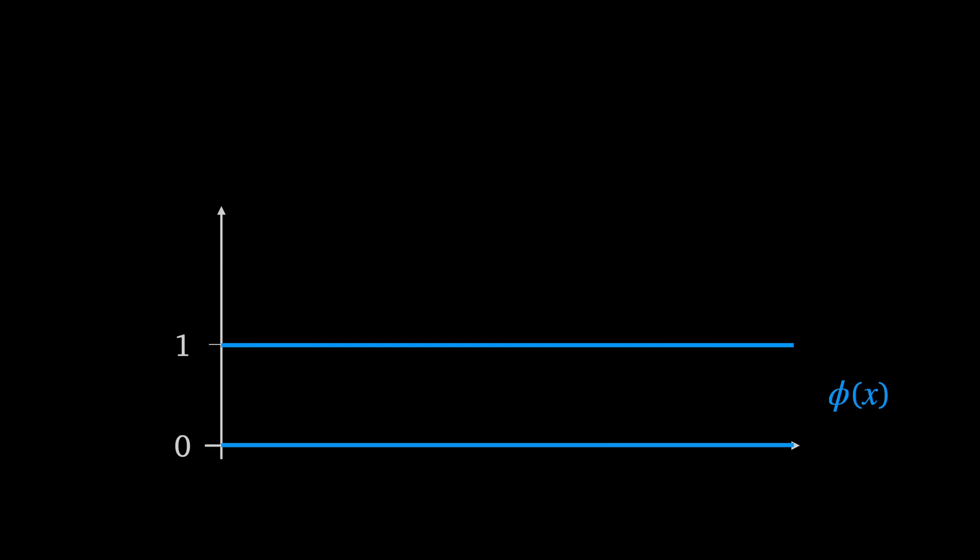Also since both the rationals and the irrationals are dense on the real line that is any interval no matter how small contains both rational and irrational numbers we can't even say that the Dirichlet function oscillates up and down. There's just no concept of the next number on a continuum.